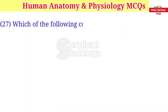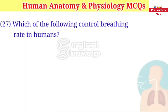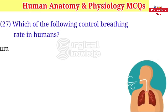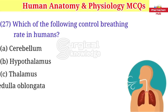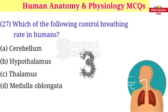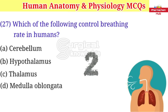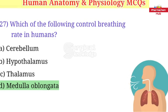Which of the following controls breathing rate in humans? A. Cerebellum B. Hypothalamus C. Thalamus D. Medulla oblongata. Right answer is medulla oblongata.